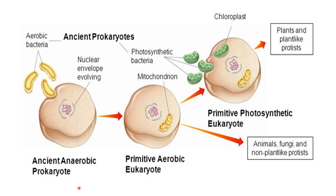Prokaryotes can be aerobic, anaerobic, and photosynthetic. Aerobic prokaryotes are those that had the ability to produce energy in the form of ATP — adenosine triphosphate — and they could use oxygen. Anaerobic bacteria did not have the ability to use oxygen. Some bacteria had the ability of photosynthesis, using solar energy to make their own food and converting solar energy into chemical energy.